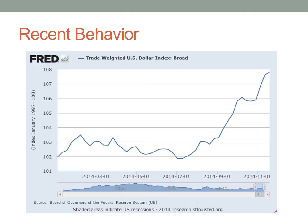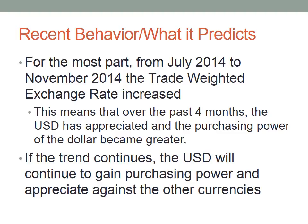As you can see, from January to July 2014, the indicator stays pretty consistent. Then, in July 2014, the indicator starts to rise substantially. It is our theory that you see the spike in the U.S. dollar index because our close trading partners in Europe and Asia, their currencies are depreciating. From July 2014 to November 2014, the trade-weighted exchange rate increased. This means that over the past four months, the U.S. dollar has appreciated and the purchasing power of the dollar became greater.